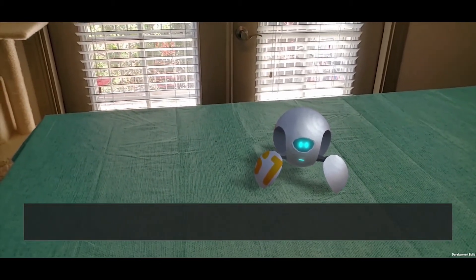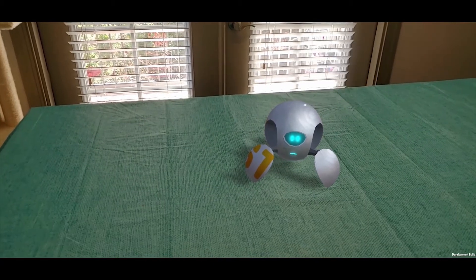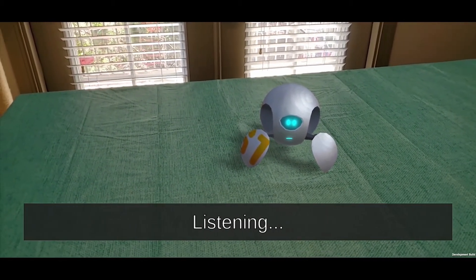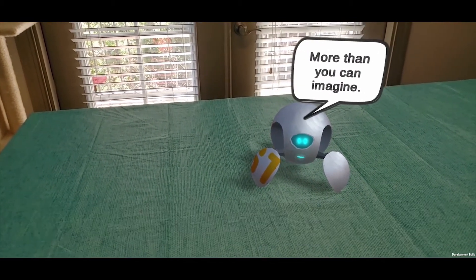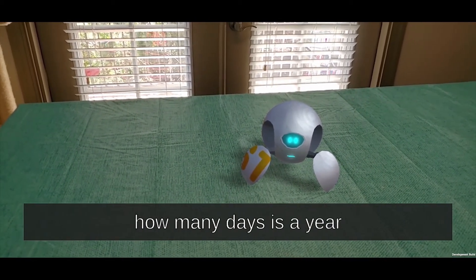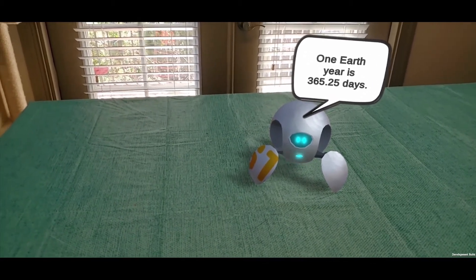Why do we have to sleep early? Why does the sun rise? How many days? More than you can imagine. How many days a year? One Earth year is 365.25 days.